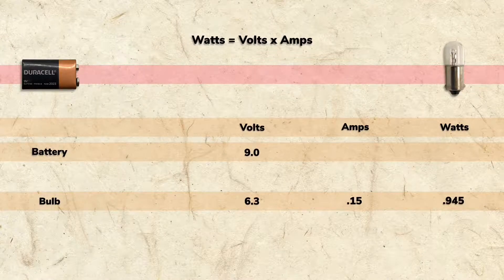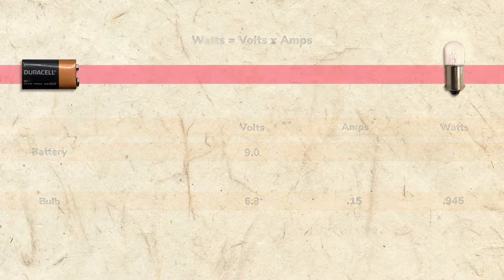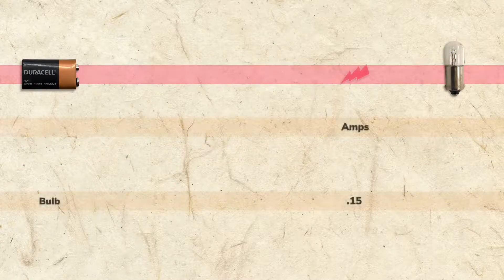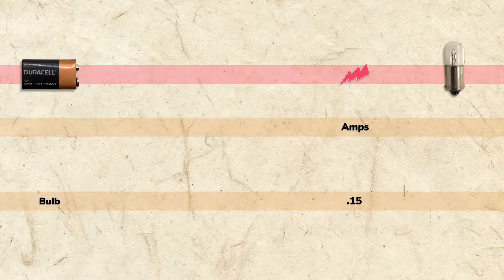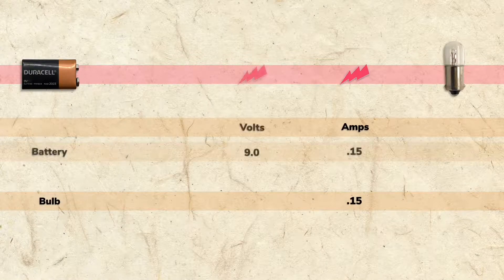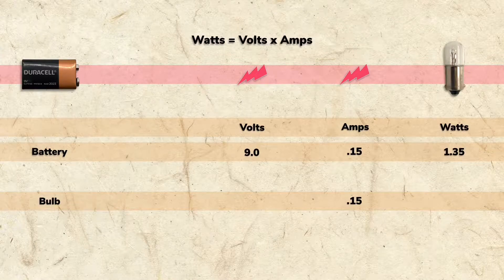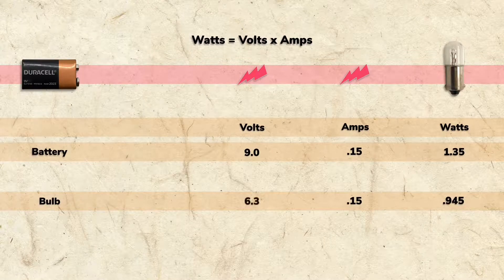If we connect the 9-volt battery to the bulb, it will run too hot and blow. That's because the 0.15 amps drawn from the bulb at the battery's 9 volts produces 1.35 watts, and the bulb is only able to handle 0.945 watts at 6.3 volts.